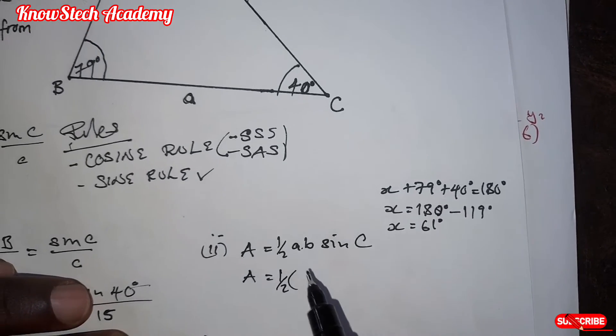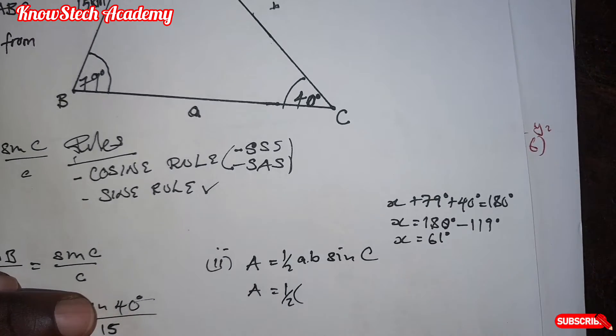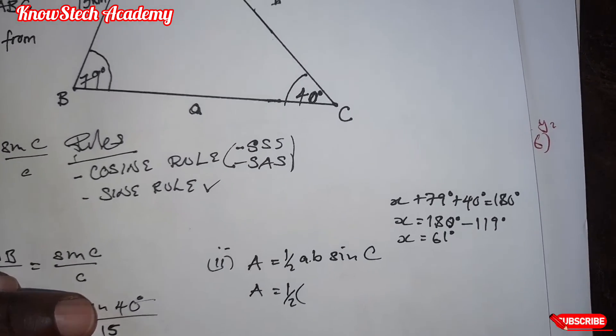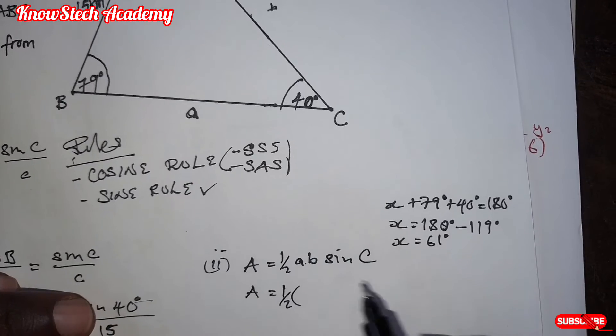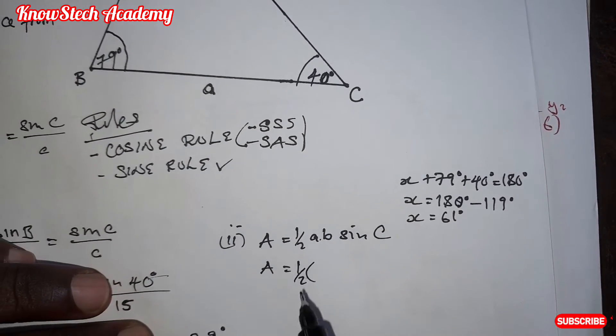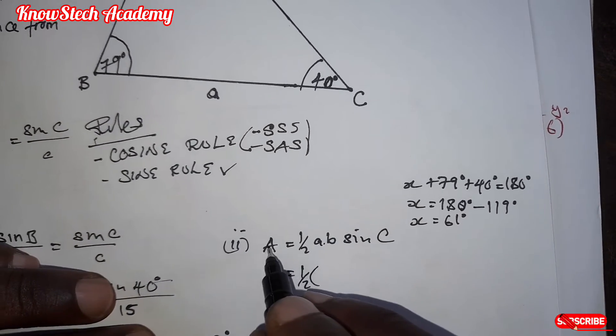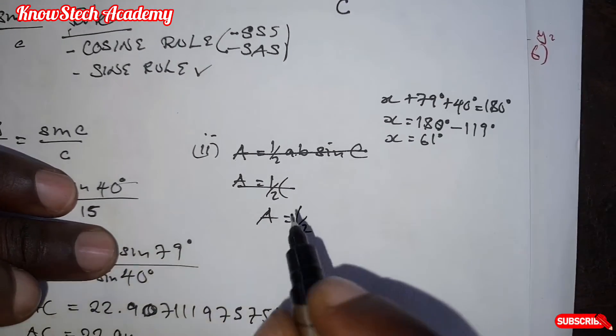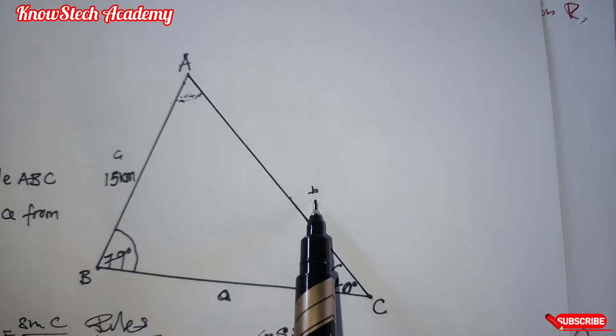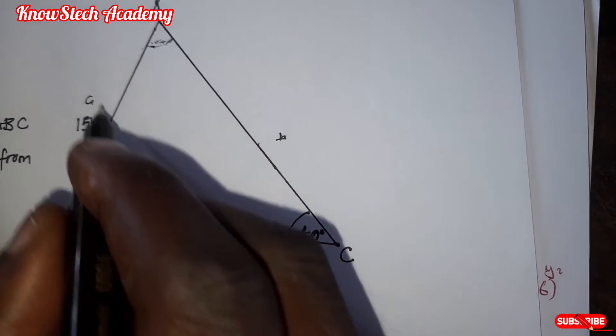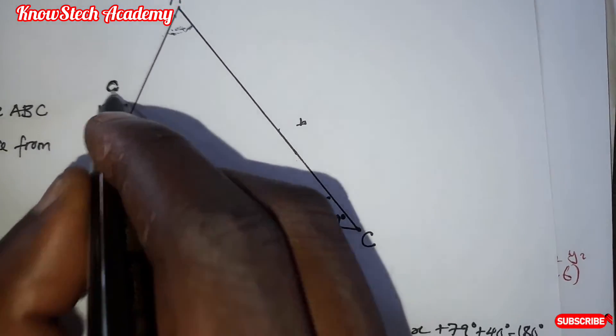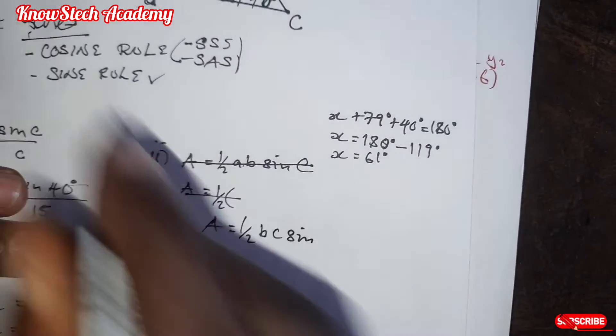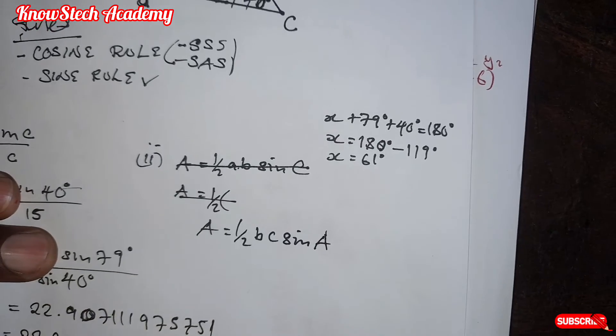So area is equal to half. We will not use A here. Sorry. We use B and C. So the formula is supposed to be, apologies, area is equal to half. The two given sides here is B and C, not A. So B and C, they need to be sine this angle, sine A.